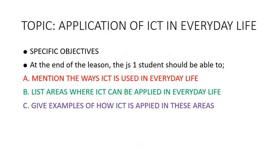The topic that we shall be dealing with today is Application of ICT in Everyday Life. Our specific objective is that at the end of the lesson, the JS1 student should be able to: A) Mention the ways ICT is used in everyday life; B) List areas where ICT can be applied in everyday life; C) Give examples of how ICT is applied in these areas.